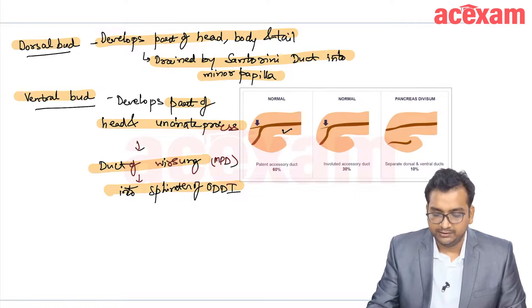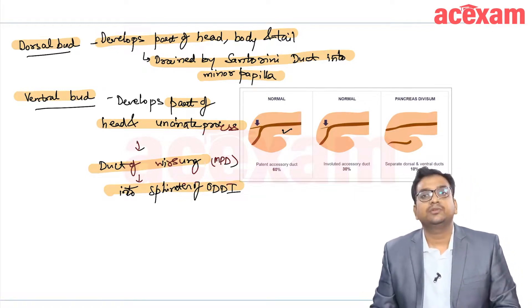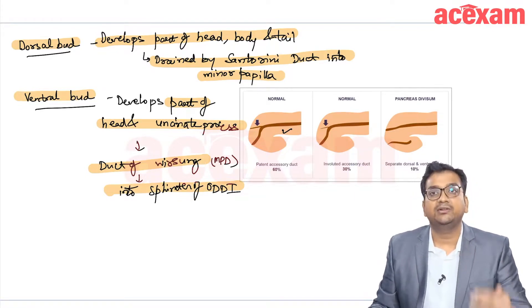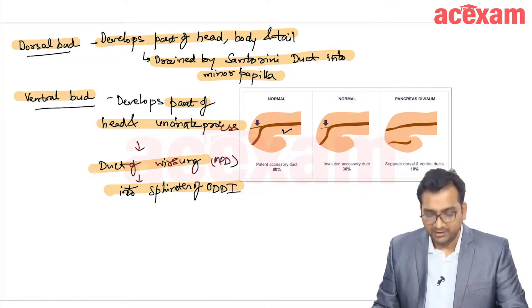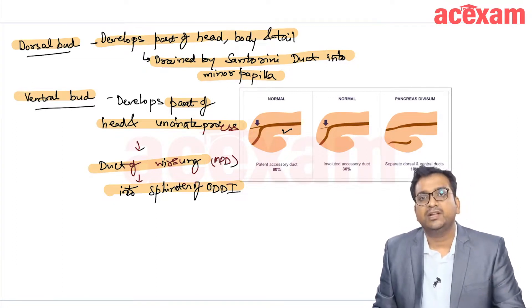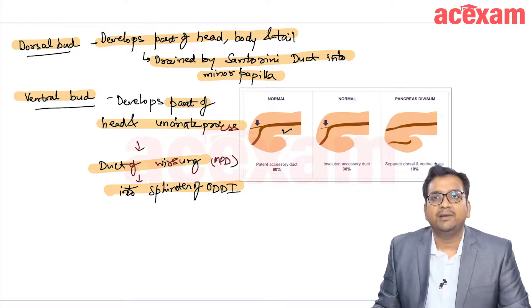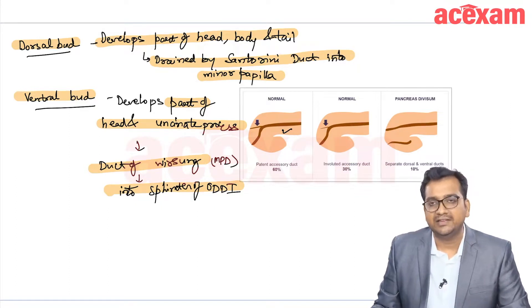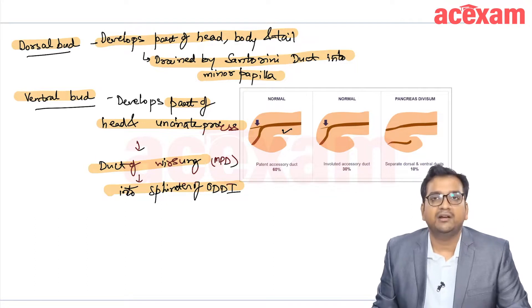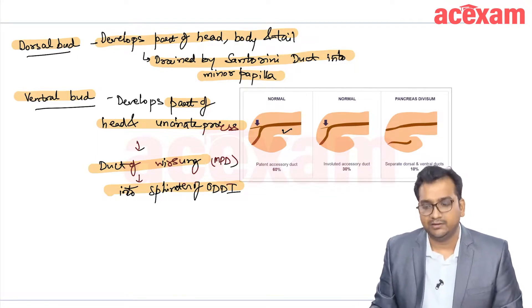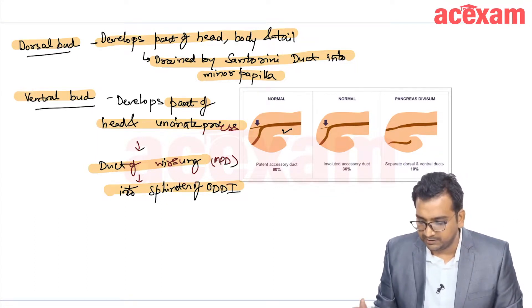Key exam questions: the body and tail of the pancreas develop from the dorsal bud; the head of the pancreas develops from both the ventral and dorsal buds; and the uncinate process develops from the ventral bud.